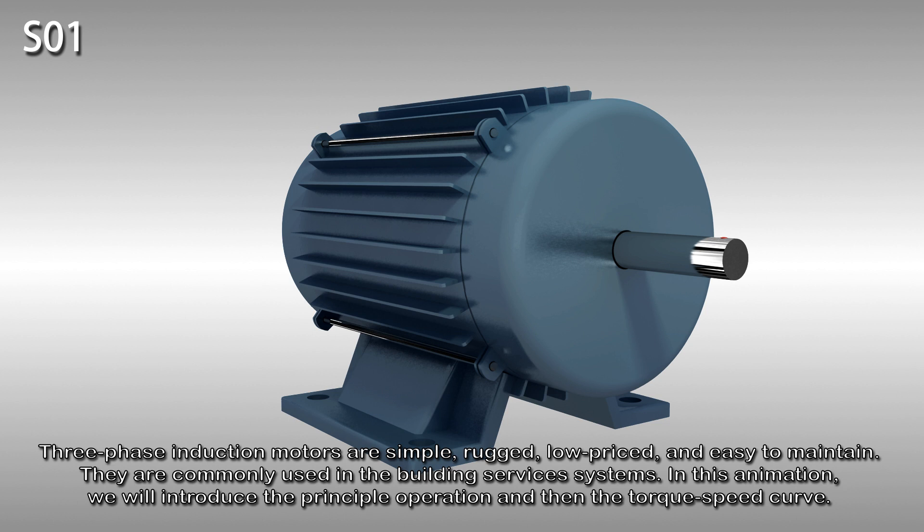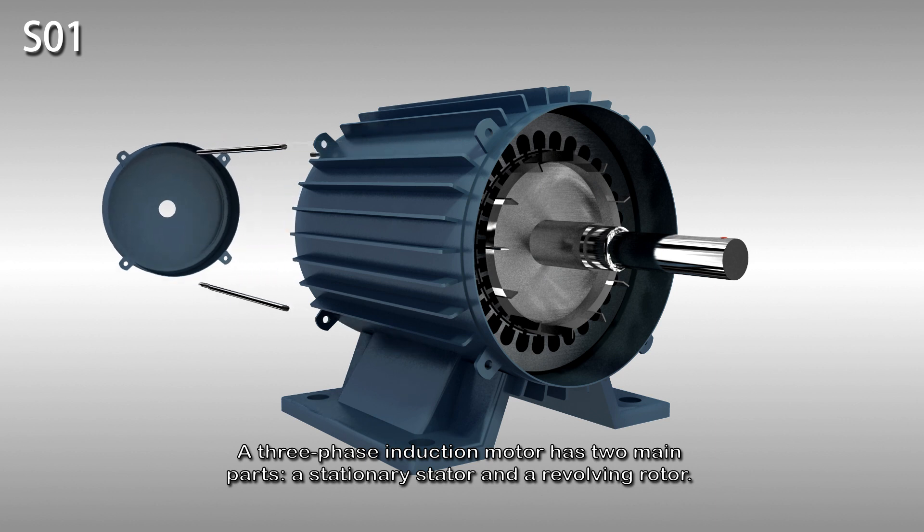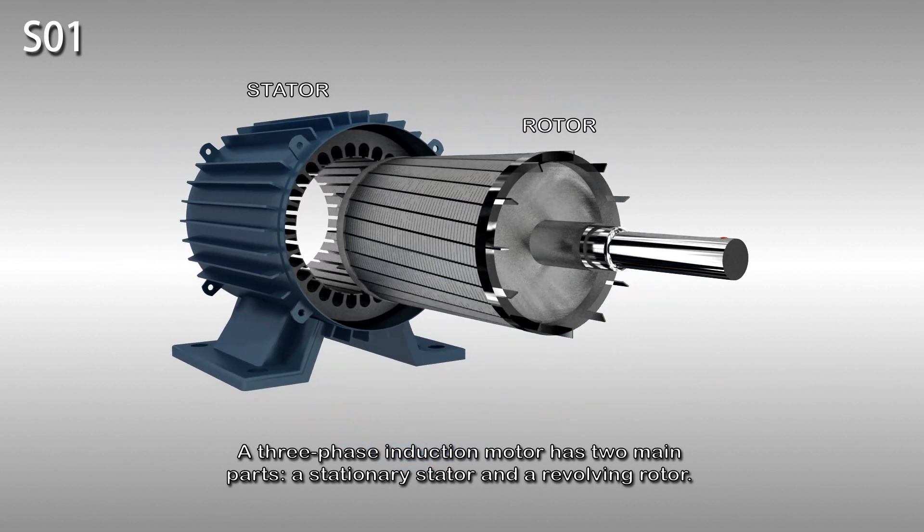In this animation we will introduce the principle of operation and then the torque speed curve. A three-phase induction motor has two main parts, a stationary stator and a revolving rotor.